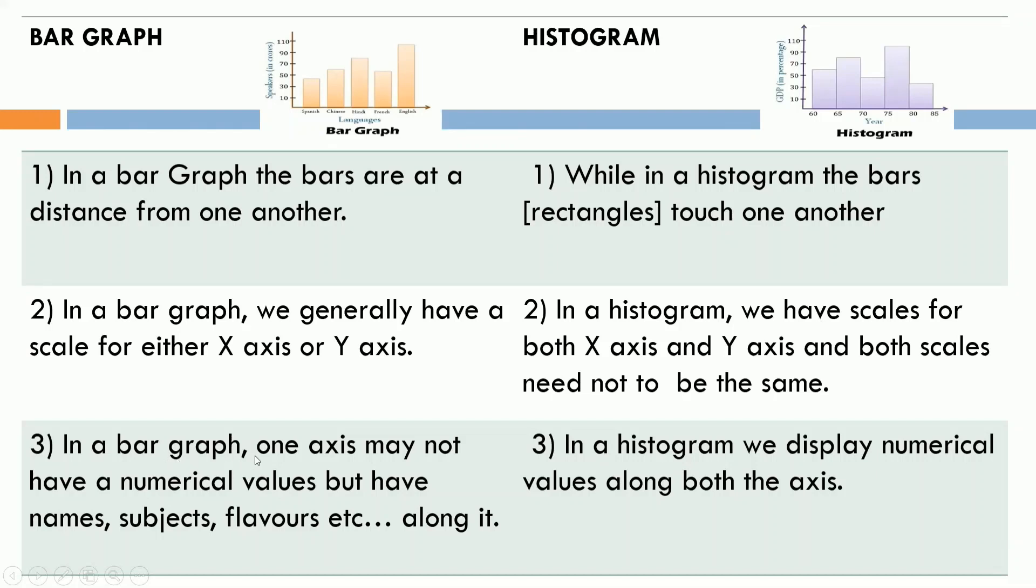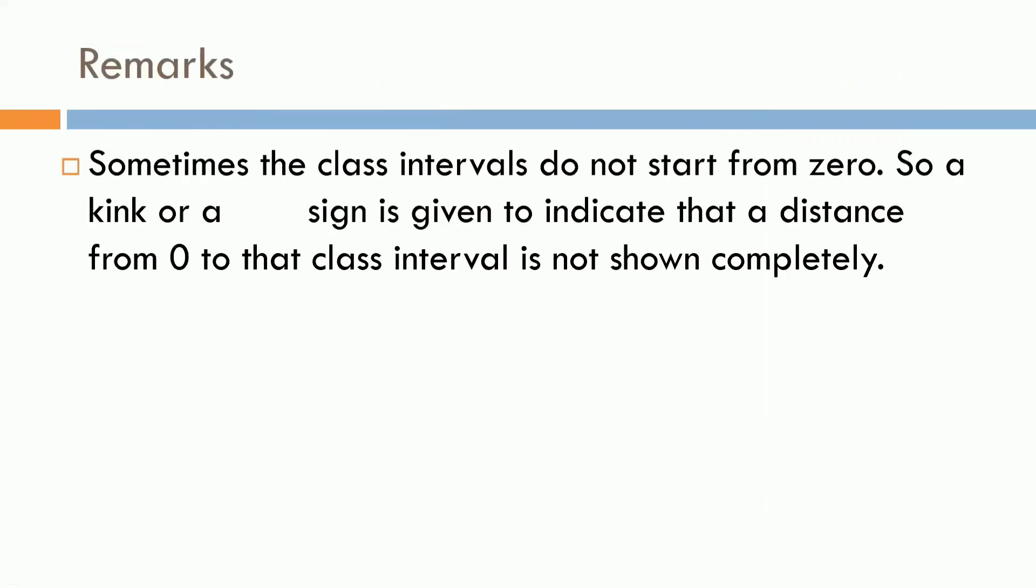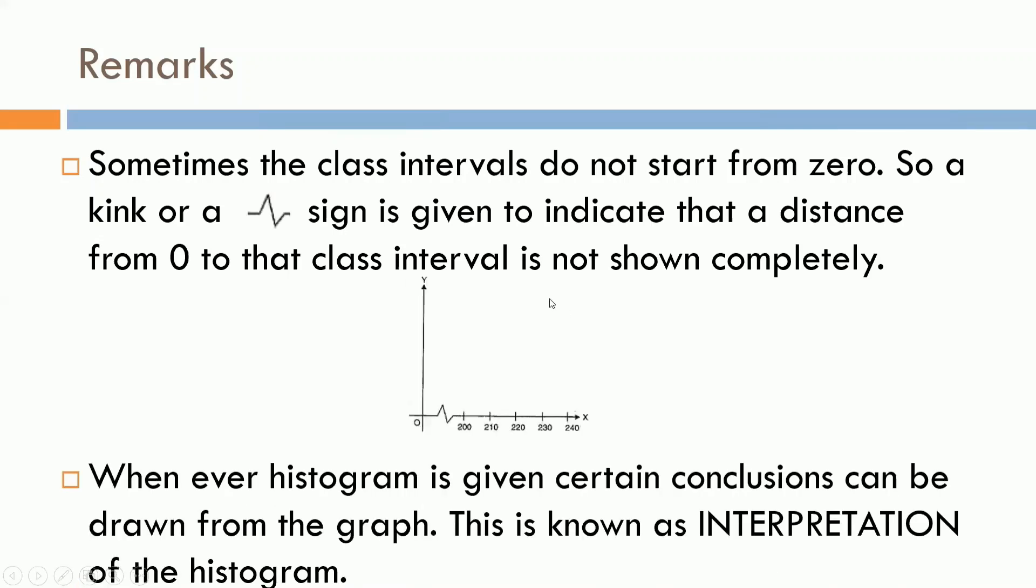Here, the third difference is, one axis may not have a numerical value, but there can be name, subject, flavors, colors, etc. While in case of histogram, we display numerical values along both the axes. While plotting the graph, two things to be kept in mind. First one is, sometimes the class intervals do not start from 0. So, a kink or this sign, you can see the sign, is given to indicate that a distance from 0 to that class interval is not shown completely. Next, another point is, whenever histogram is given, certain conclusions can be drawn from the graph. This is known as interpretation of the histogram.